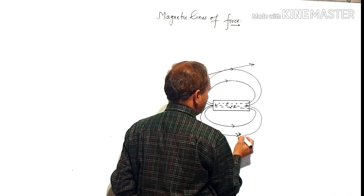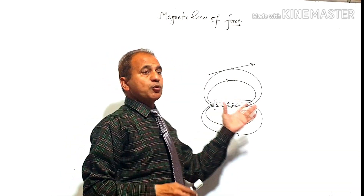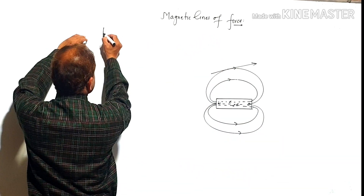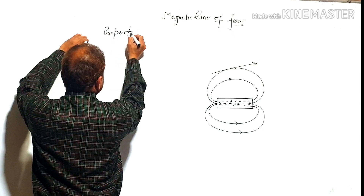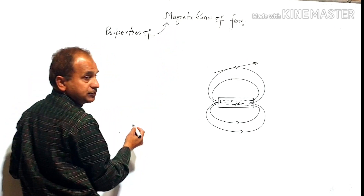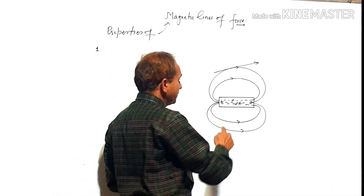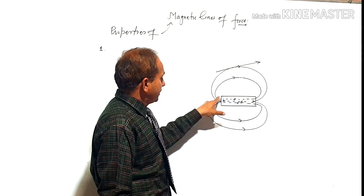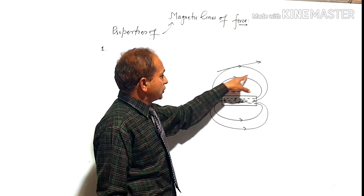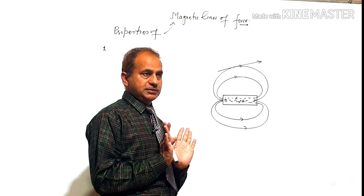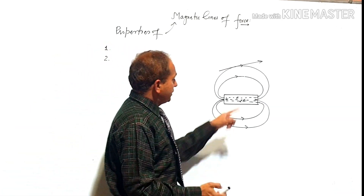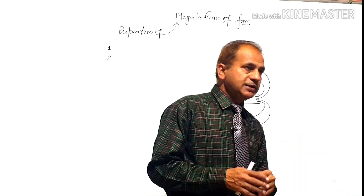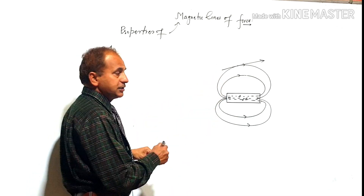These are the magnetic lines of force. Now let us see some properties. The magnetic lines of force are continuous in nature. Property one: the direction is taken from North to South outside the magnet and South to North inside the magnet. Property two: the tangent drawn at any point gives the direction of magnetic field intensity at that particular point.